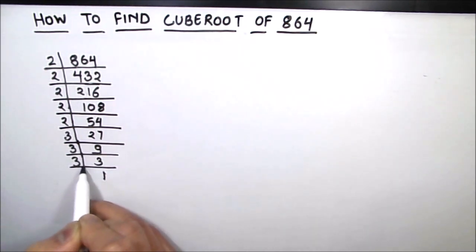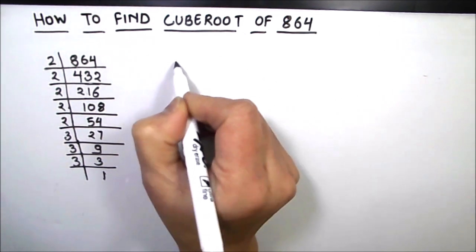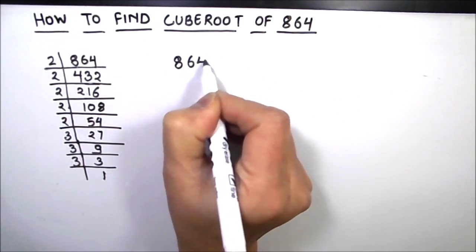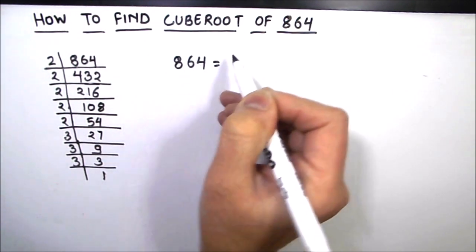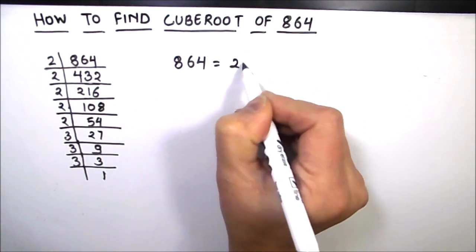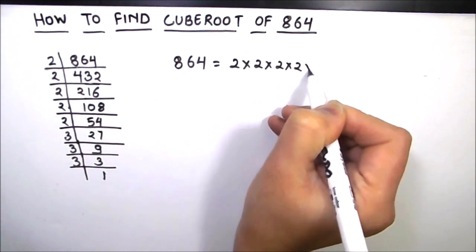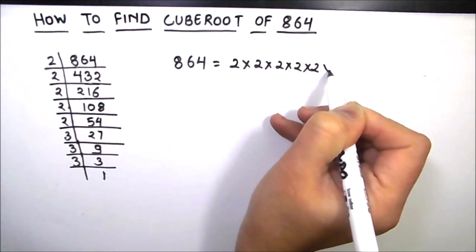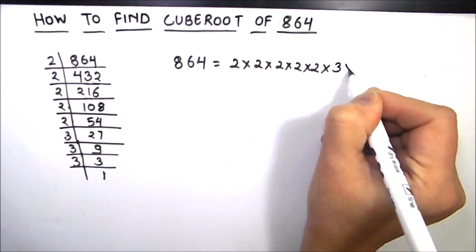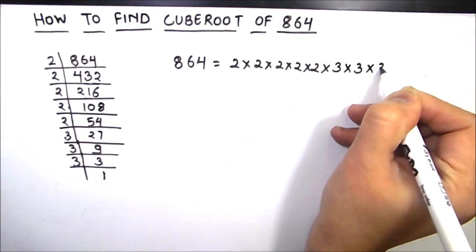So now we have all the factors of 864. Let us write it as the product of its prime factors: 864 = 2 × 2 × 2 × 2 × 3 × 3 × 3.